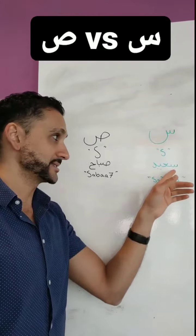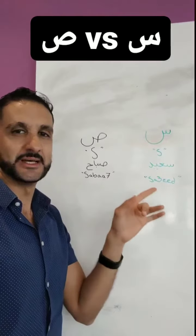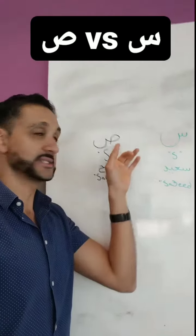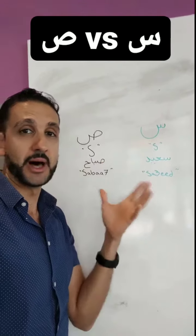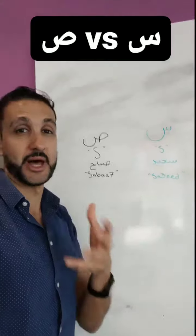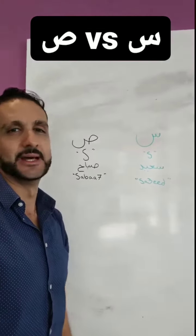So, light S — the Seen: Sa. Heavy S — the Saad: Sa. So Sabah Al-Khayr, good morning, and Saeed.